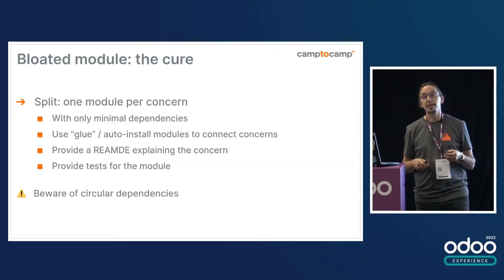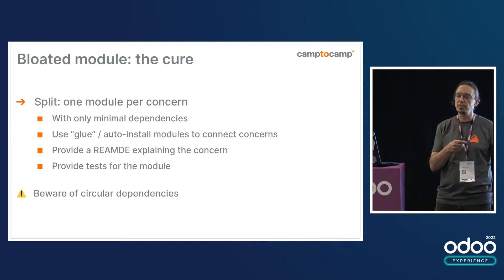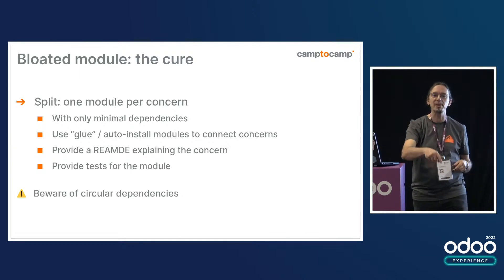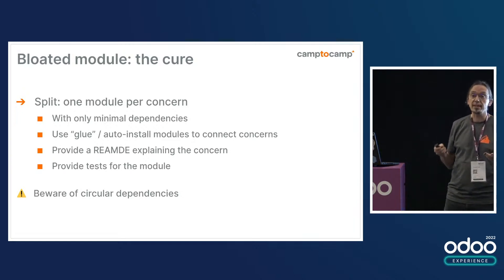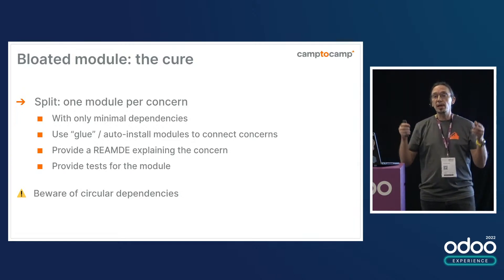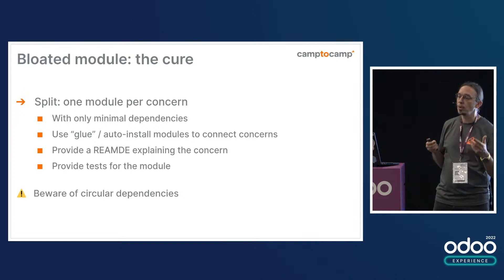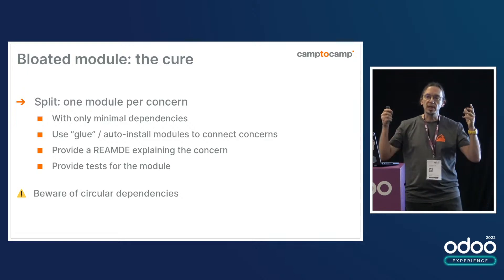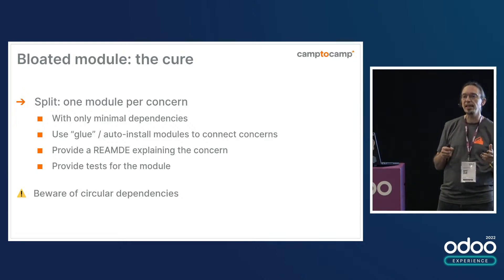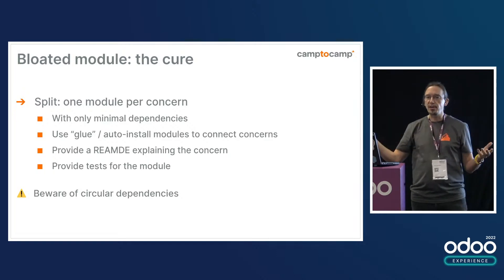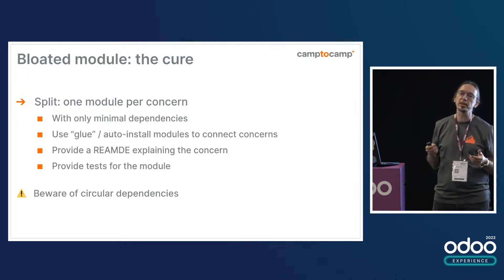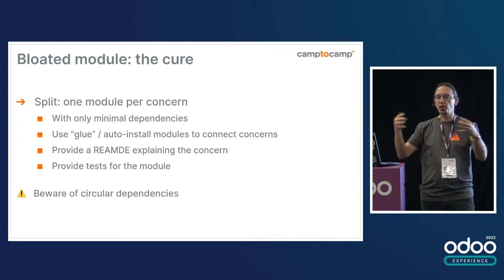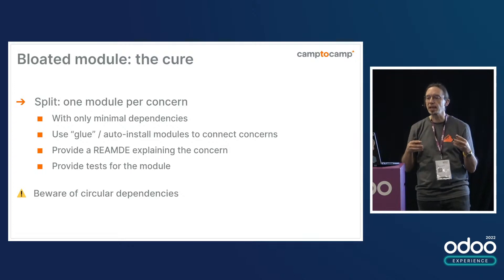How can you cure that? Well, at that stage it's very late, obviously. So you want to catch this way before that stage. Split — that's the obvious way. Try to architect your code with one module dealing with one concern, using minimal dependencies. And if you need to have things depending on many modules, you can use the auto-install feature of the Odoo framework to create glue modules to put things together and have things working together easily.